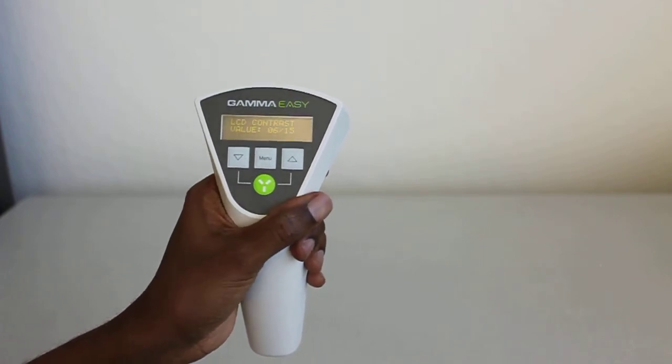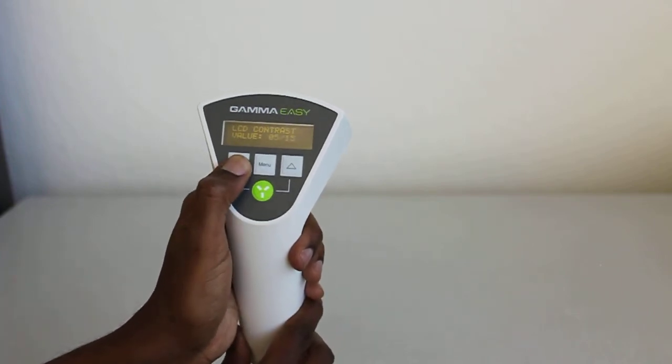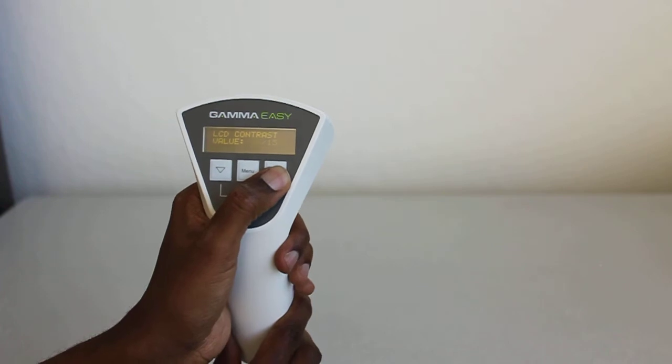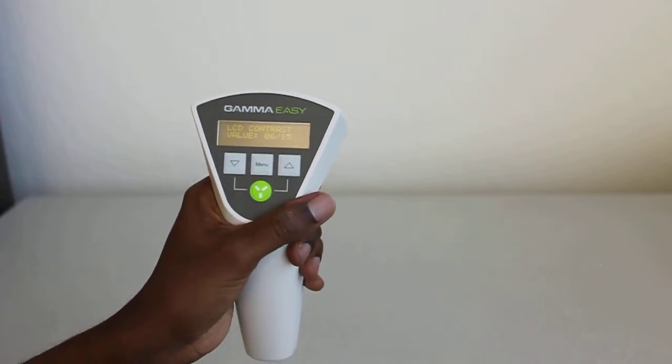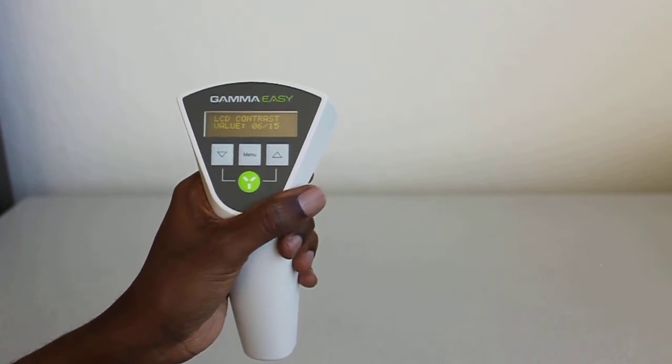Next is the LED contrast value, and that's 6 over 15. You can make it brighter or less bright just by hitting the up and down arrows on the left and right-hand side. The lower the value, the better it is for battery conservation.